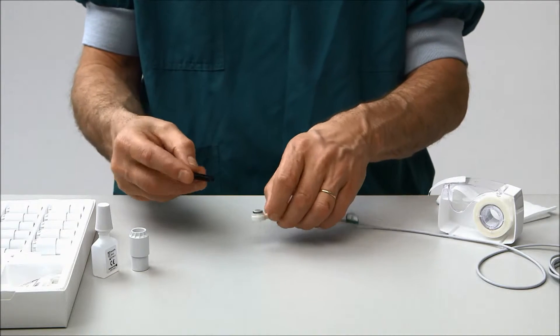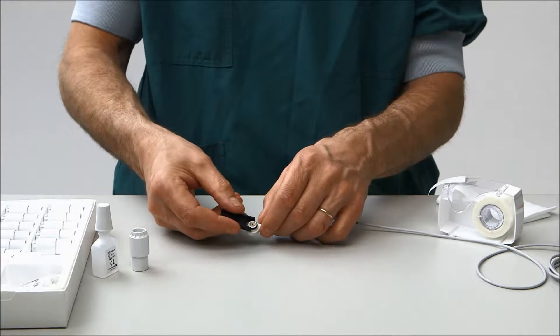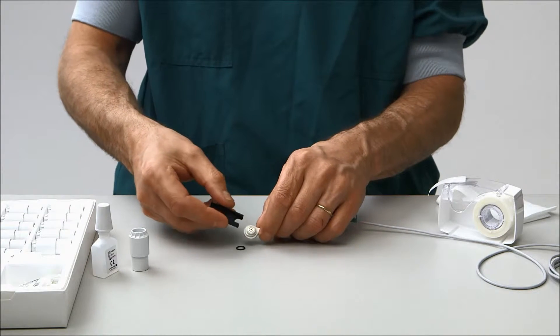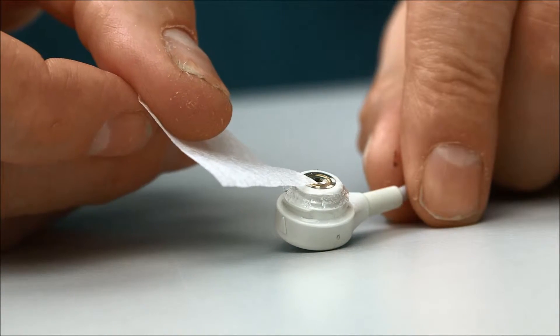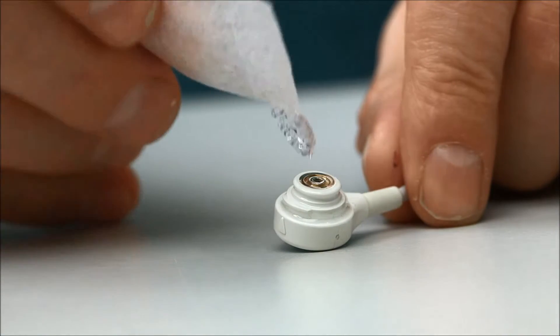First, remove the old O-rings using the O-ring removal tool. Next, take a piece of tape, touch the corner of the tape to the membrane surface, and lift the membrane right off.